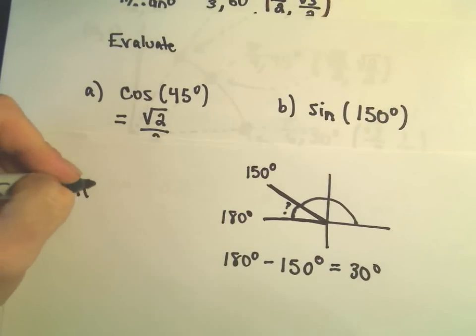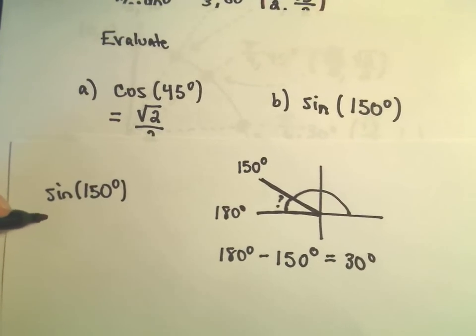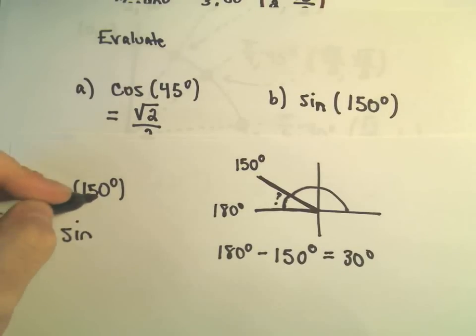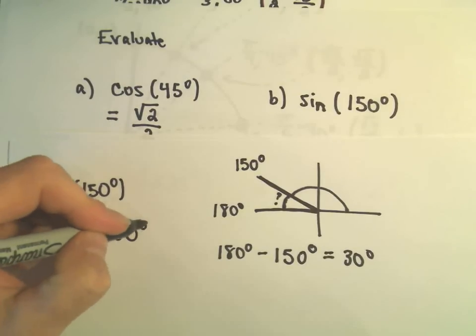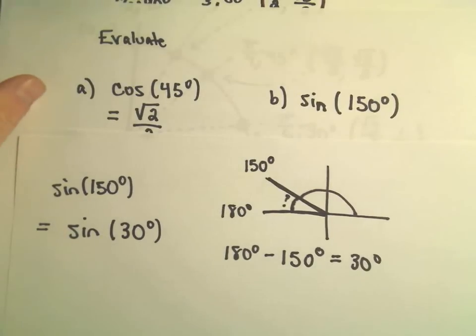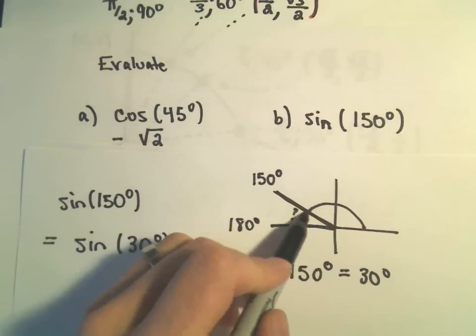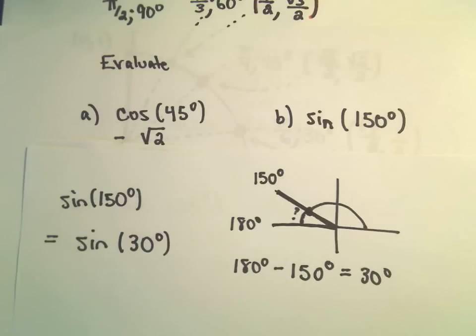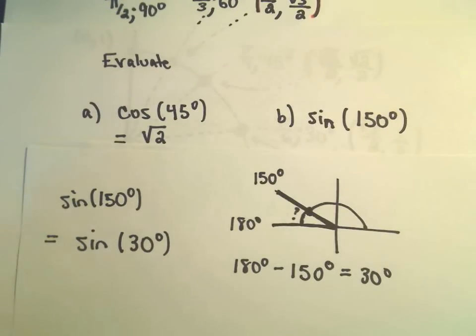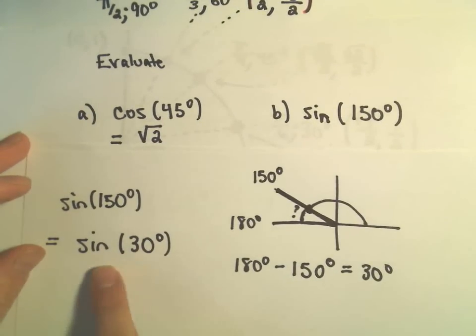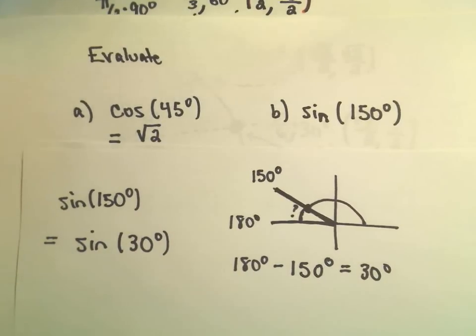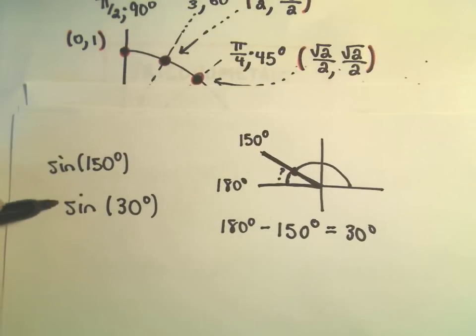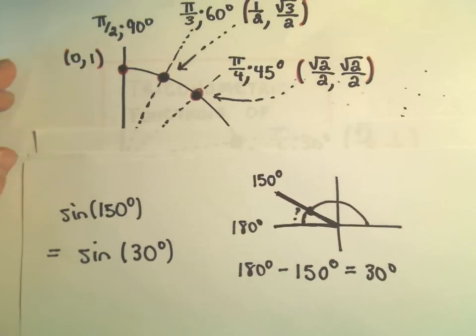So sine of 150 degrees. The idea is I'm going to say that's equal to, I'm going to replace it, its original angle with its reference angle. But I need to be careful. I need to think, would this be positive or negative? Well, sine in the second quadrant, that has to do with the y-coordinate. The y-coordinates would certainly be positive in this quadrant. So sine of 150 degrees is positive. All the trig functions in the first quadrant are going to be positive. So I don't really need to change the sign or do anything different here.